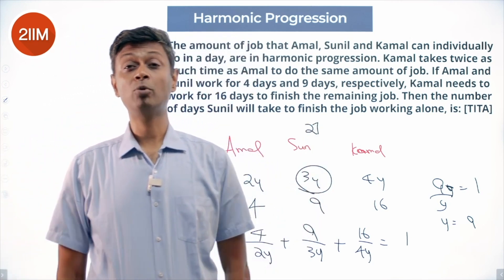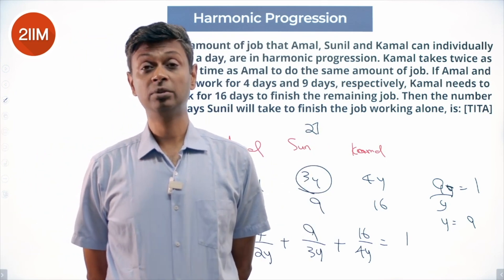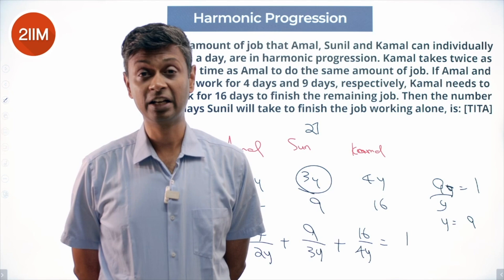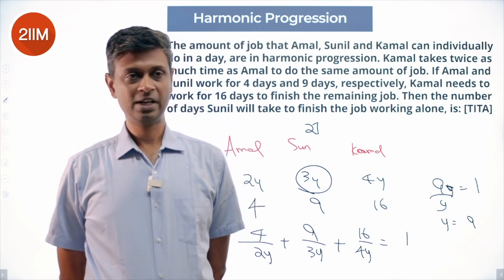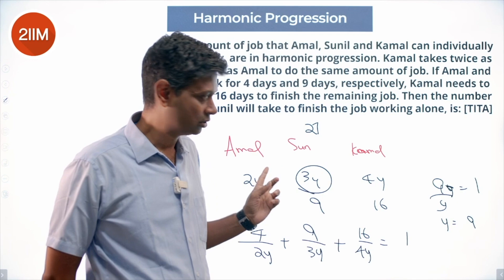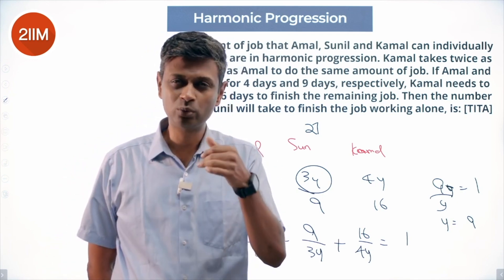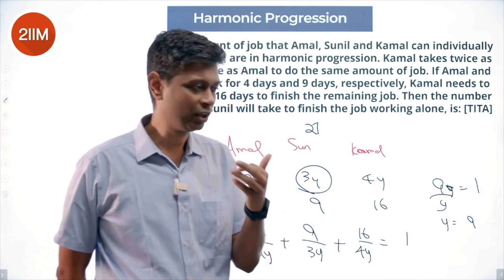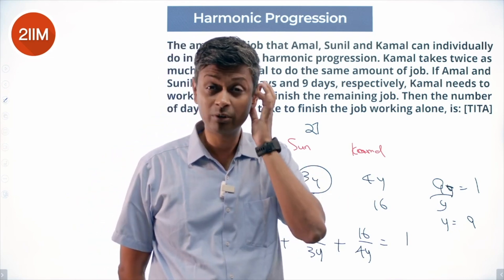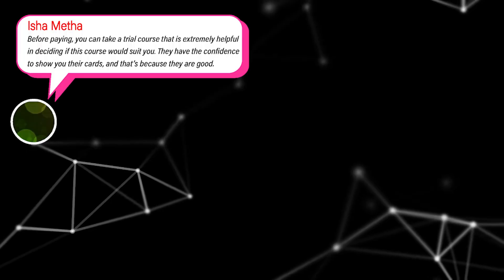Very important to understand: if the amount of work done in a given day by three people is in harmonic progression, the number of days taken will be in arithmetic progression. Knowing Kamal's time is twice Amal's, instead of using x, 3x/2, 2x, we can use 2y, 3y, 4y — much simpler, avoiding decimals. After that, we just mechanically write down the answer.